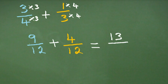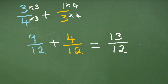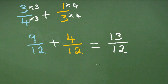We keep the denominator the same to give us 13/12. Always remember you'll be asked to give your fraction in its simplest terms. Here we've got a top-heavy fraction — there's another video on converting top-heavy or vulgar fractions into mixed fractions. To complete our answer here, we get a final answer of one and one twelfth.